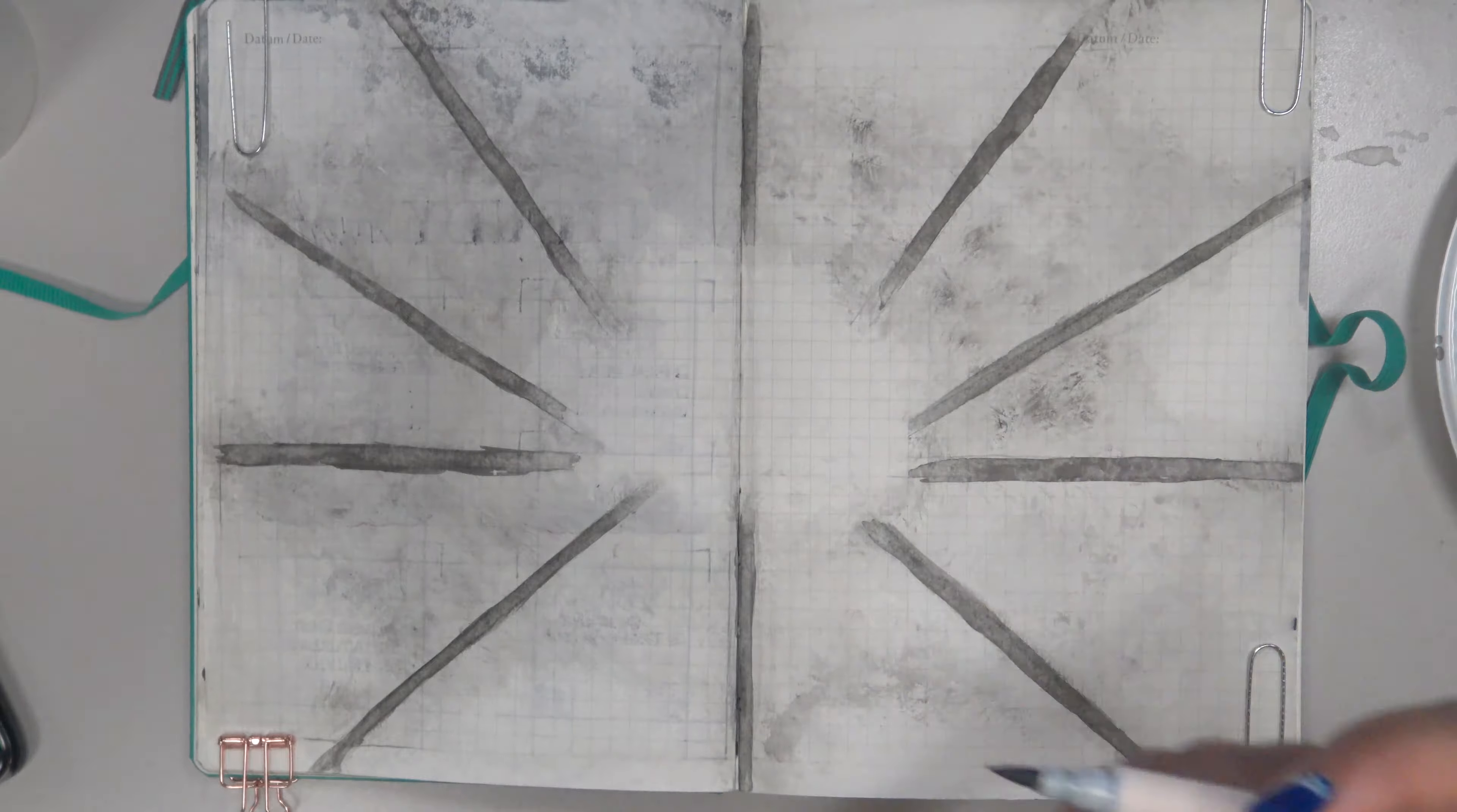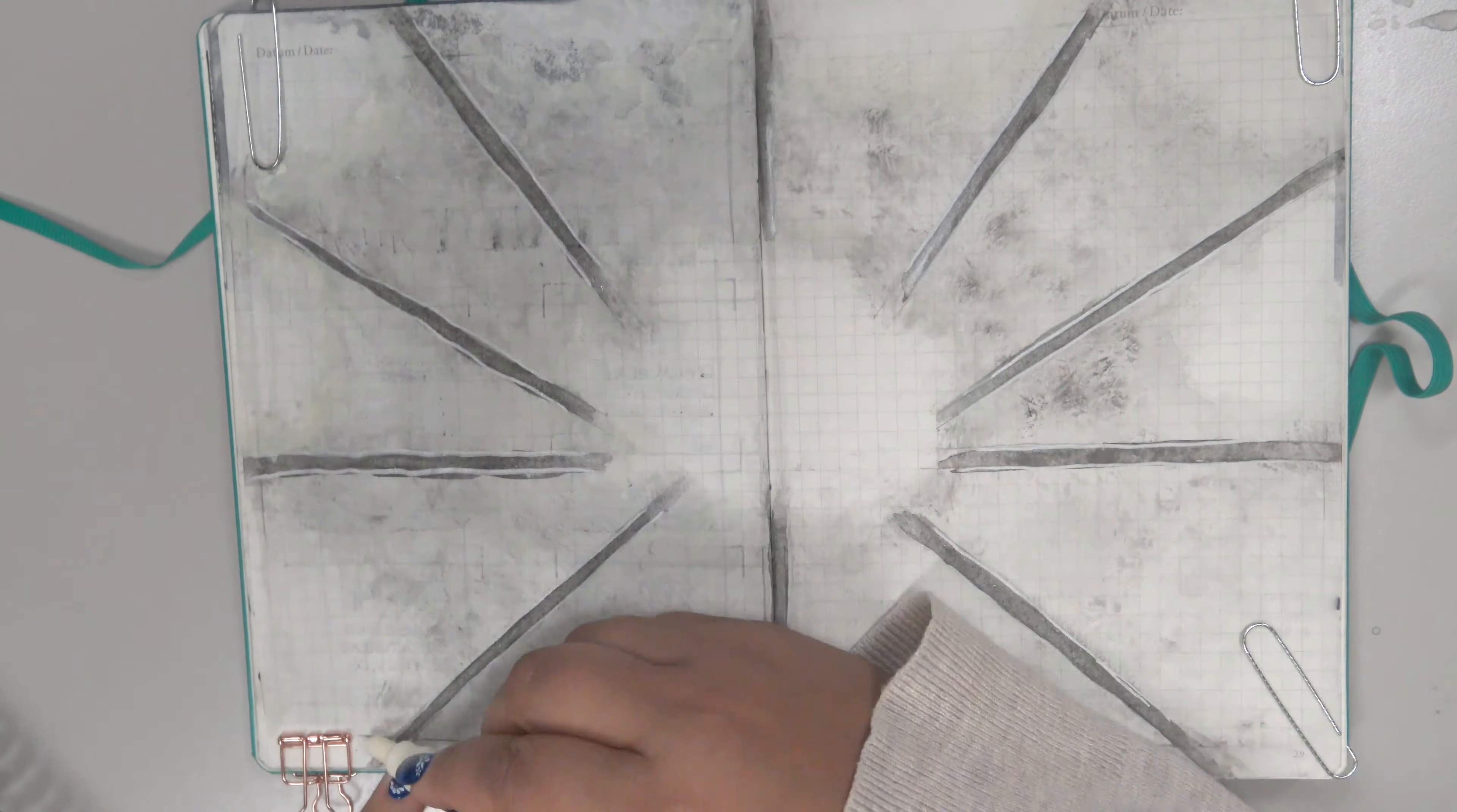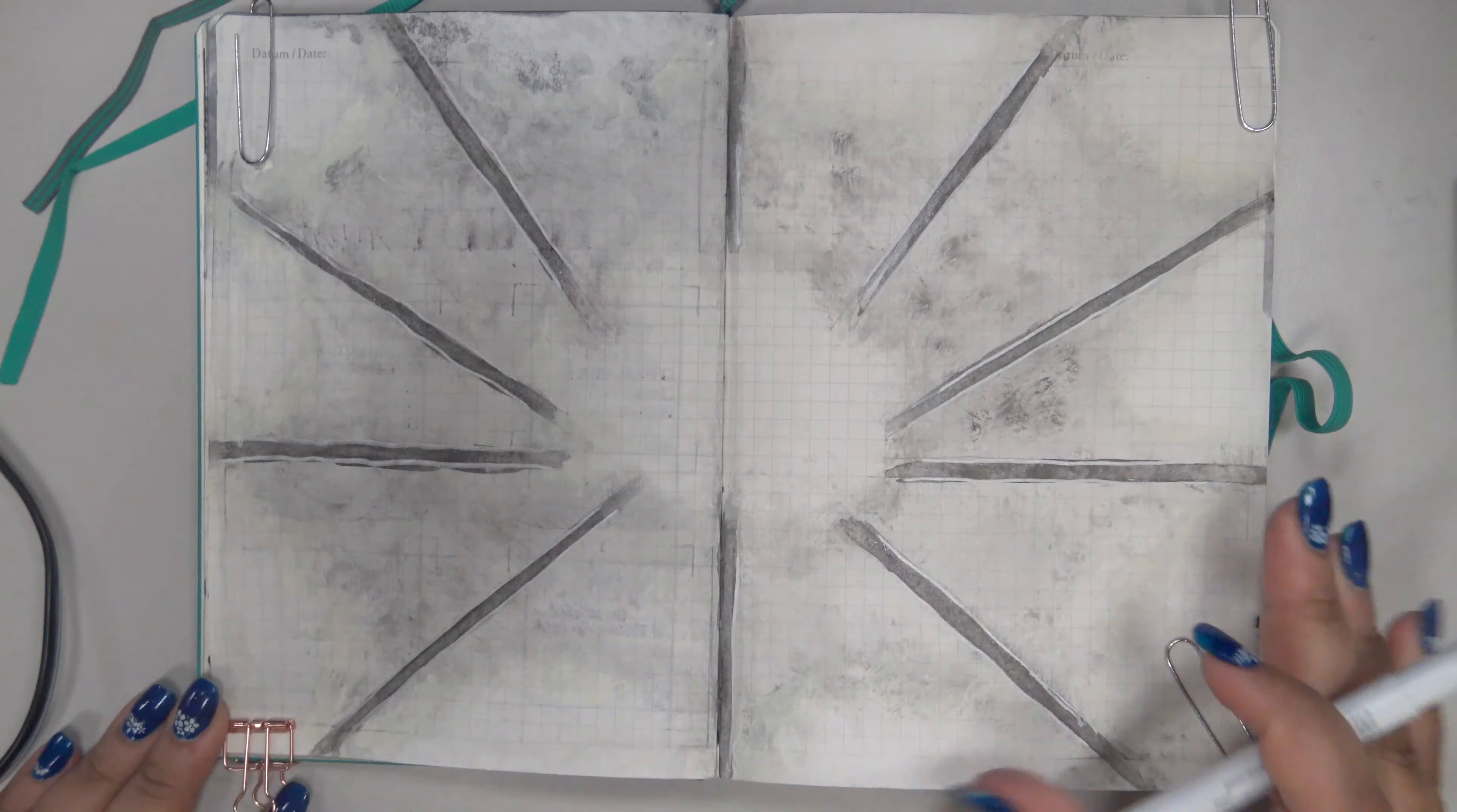With my lightest gray Zig brushables marker, I shaded them a little bit but kept the blotchy texture. Then I defined the edges of the divides a little more with my ivory uni Posca paint marker.